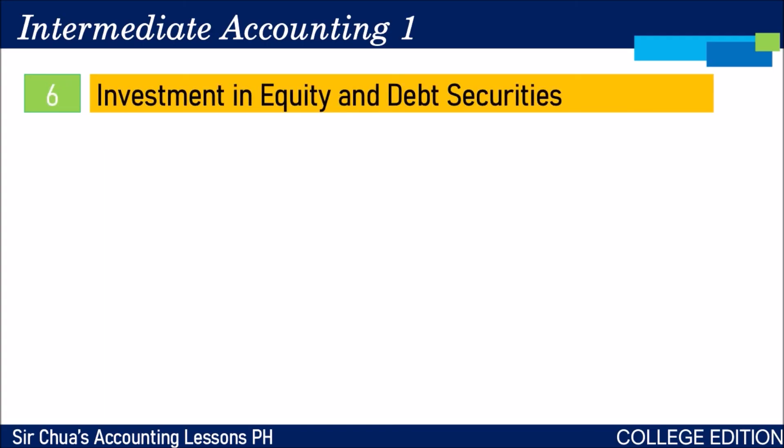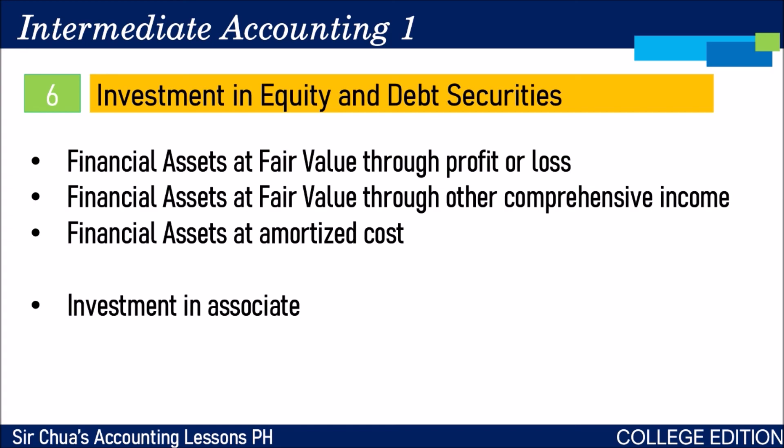For investment in equity and debt securities, we'll be talking about different financial assets at fair value through profit or loss, financial assets at fair value through other comprehensive income (FVOCI), and financial assets at amortized cost. We'll also cover investment in associate, wherein a company owns 20% or more of the voting rights in a company and exercises significant influence.